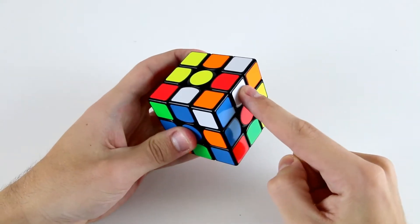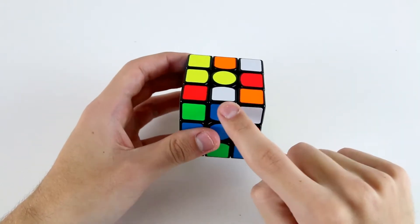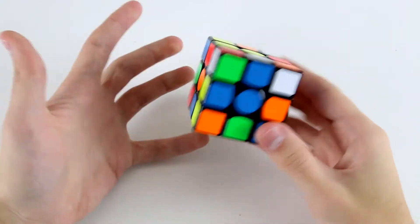Now what we're going to do is actually insert this one, and whilst we're inserting this one we're actually going to be turning this edge, this good edge into a bad edge, which isn't ideal but it makes the finger tricks a lot easier.